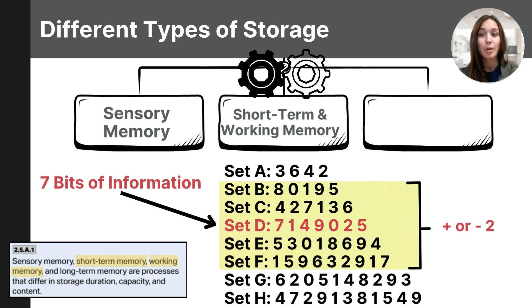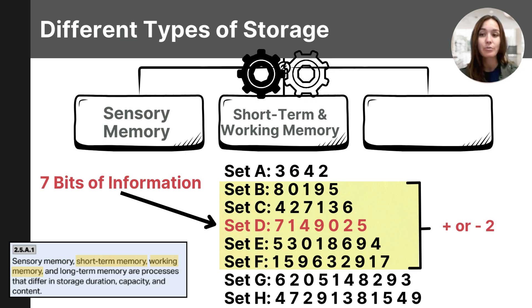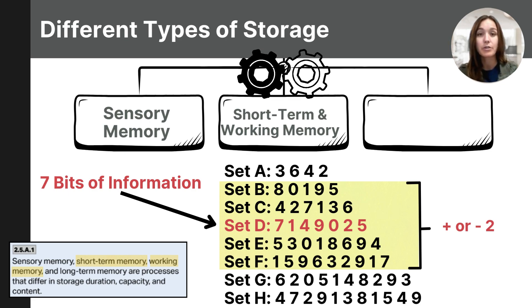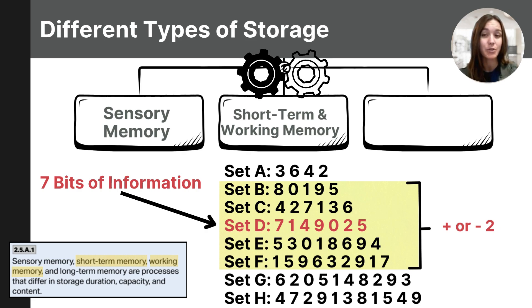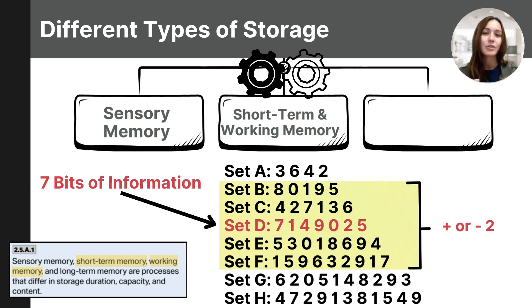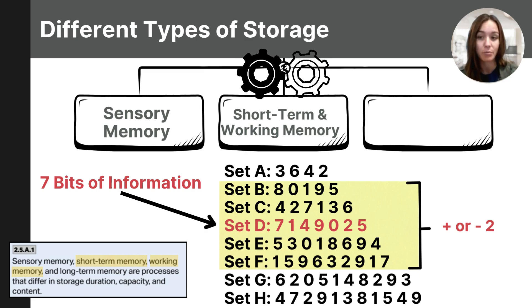Psychologist George A. Miller published a study in 1956 that he called 'the magical number seven plus or minus two.' George Miller found that short-term memory can only hold about seven items, give or take two at a time. These items can be numbers, letters, words, or other bits of information. In my example, set F had nine items, and according to Miller's magic number seven plus or minus two, it should have been nearly impossible to hold all of those items in sets G and H in your mind without chunking them down.